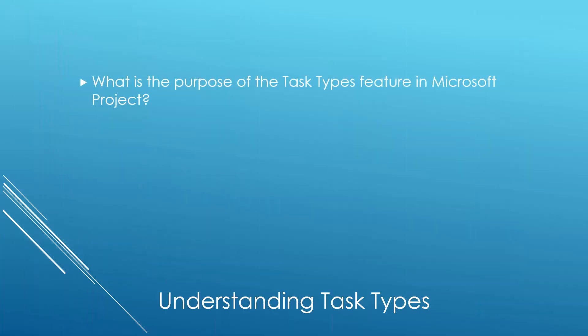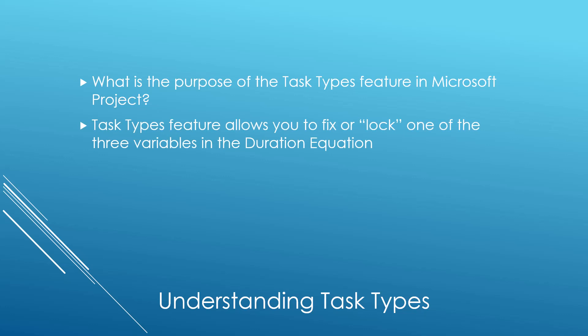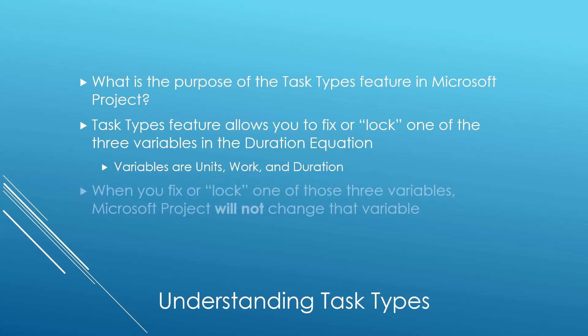So let's get started. What is the purpose of the Task Types feature in Microsoft Project? The Task Types feature allows you to fix or lock one of the three variables in the duration equation. These variables include the units and work values specified for the resource assigned to the task, as well as the duration value for the task itself. When you fix or lock one of these three variables, Microsoft Project will not change that variable.